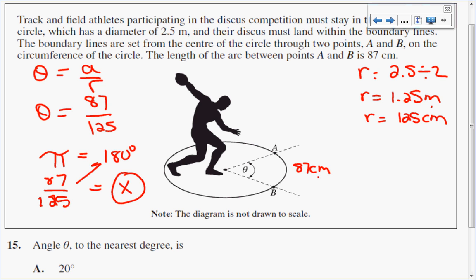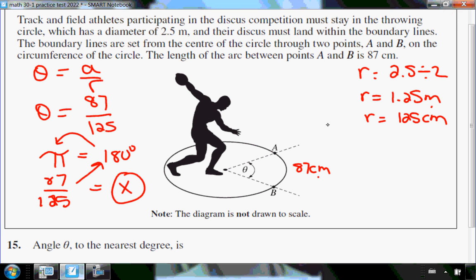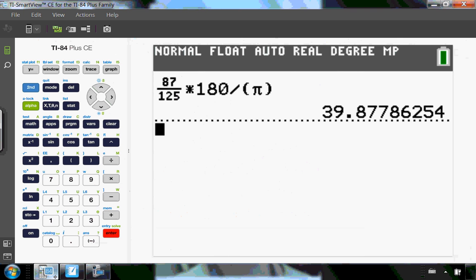To solve for x, I'm going to cross multiply and divide. So 87 over 125 multiplied by 180 divided by pi. So I'm going to put that into my calculator. So you can see I did it here. 87 over 125 times 180. And when I divide, I always put pi in brackets. Pi is a little bit finicky. Just to be super cautious, I always put it in brackets.